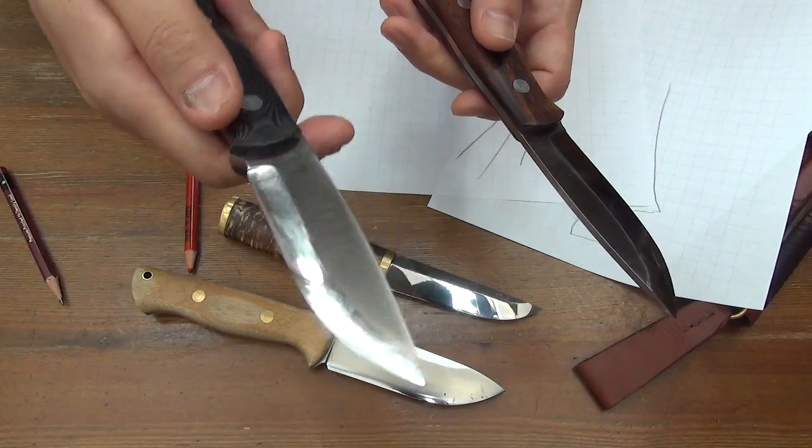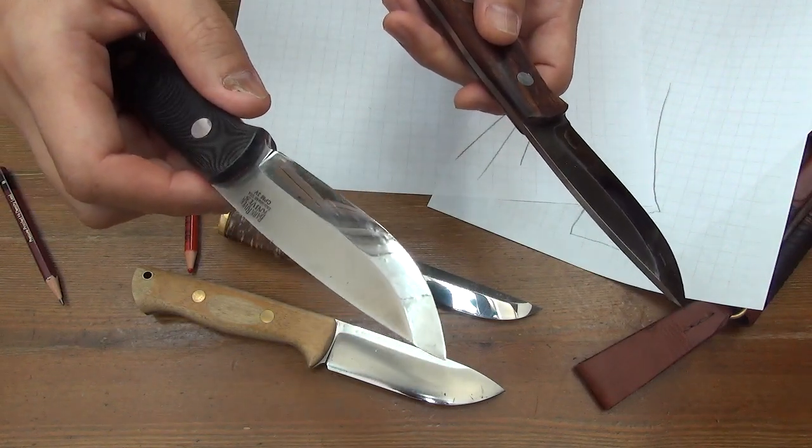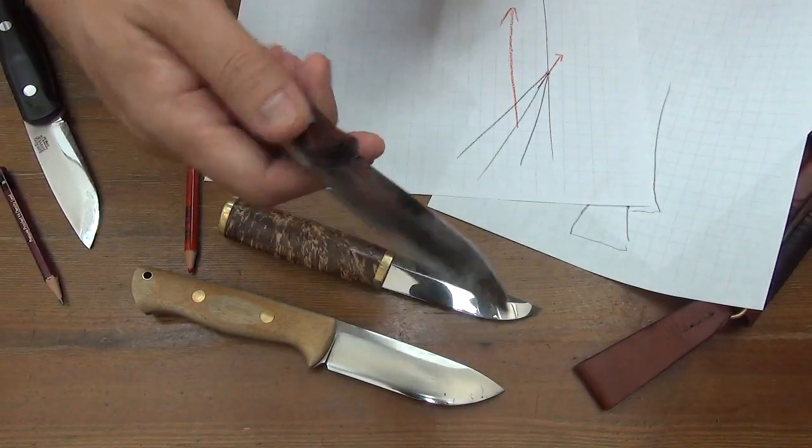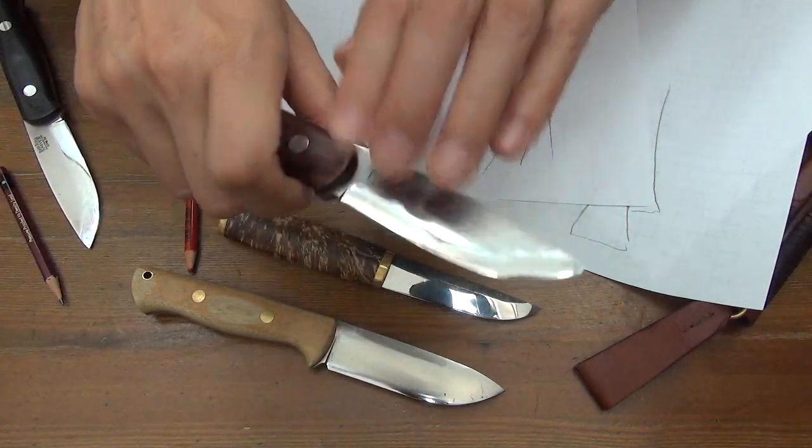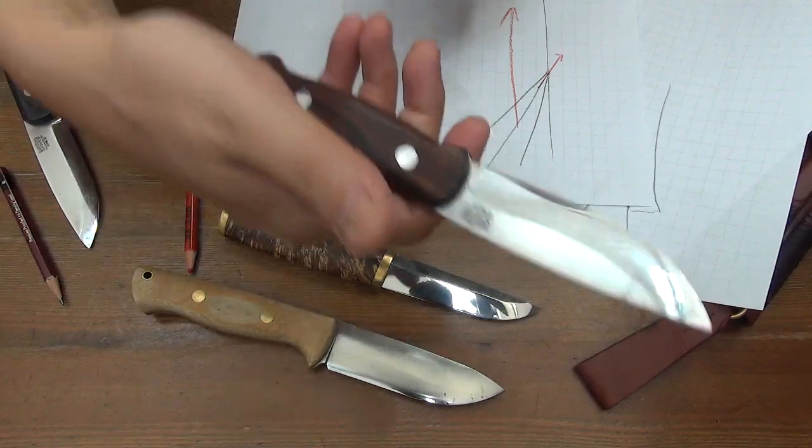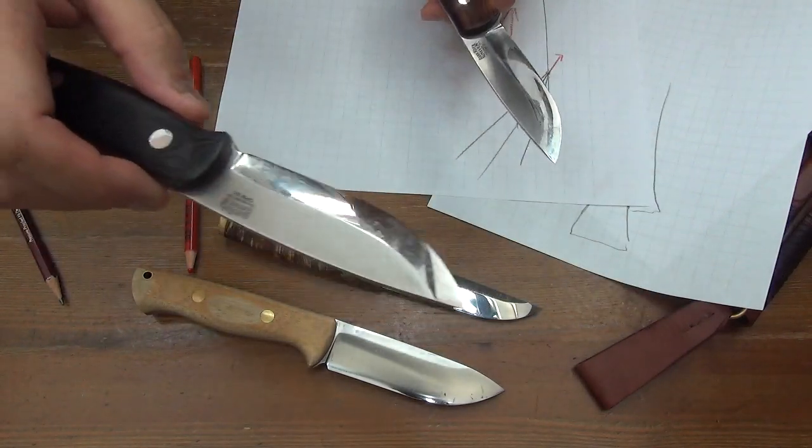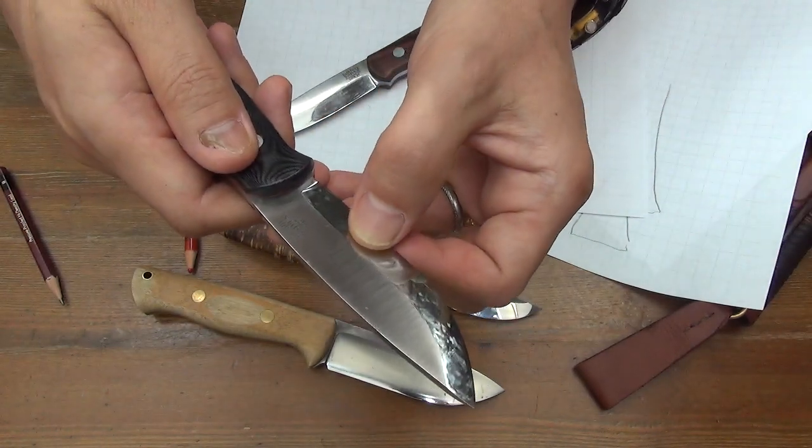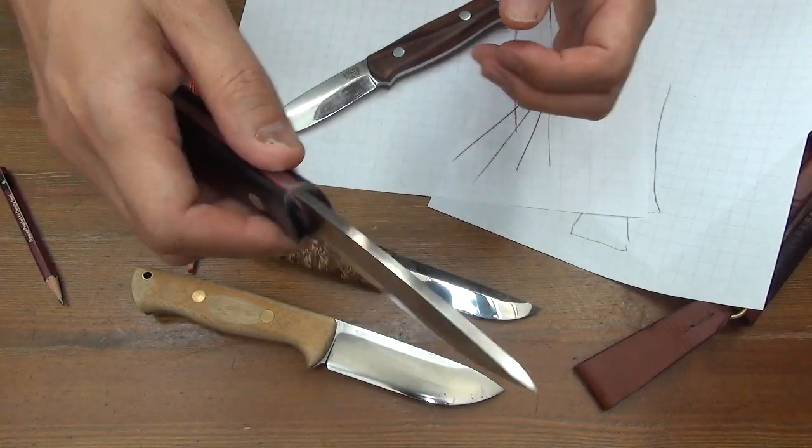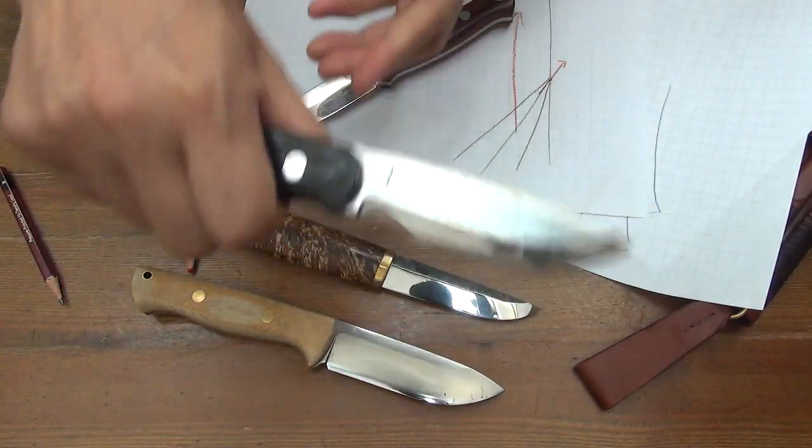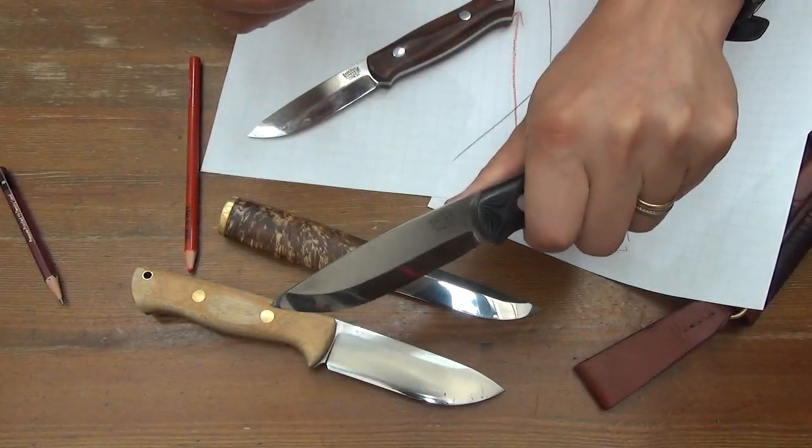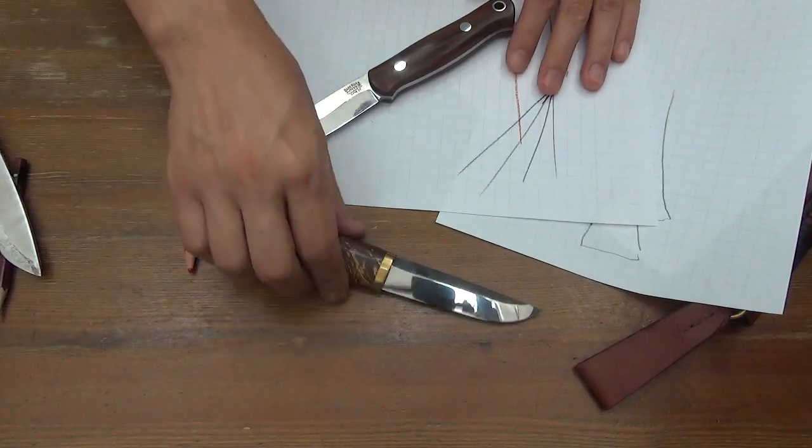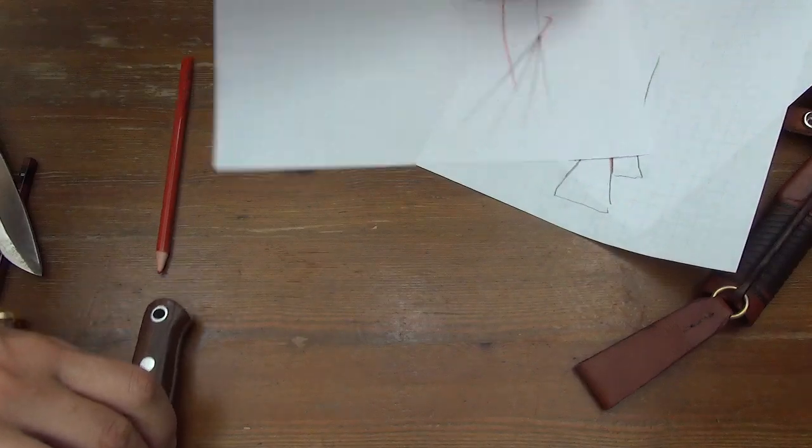Hunting geometry this side. Feather sticking geometry this side. This one on both sides has feather sticking geometry. For righty people like I am, this side feather sticking, this side hunting. Hybrid geometry for righty people. This doesn't have a hunting geometry. For hunting, too shallow. But for lefty people, good for bushcrafting, for feather sticking. This geometry.